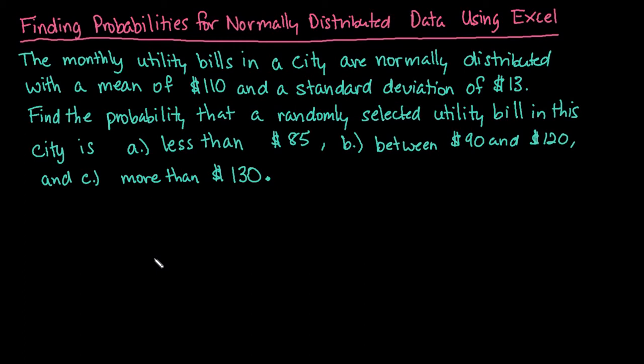The monthly utility bills in a city are normally distributed with a mean of $110, which gives us our μ, and a standard deviation of $13, which gives us our σ, that we need to calculate our values.